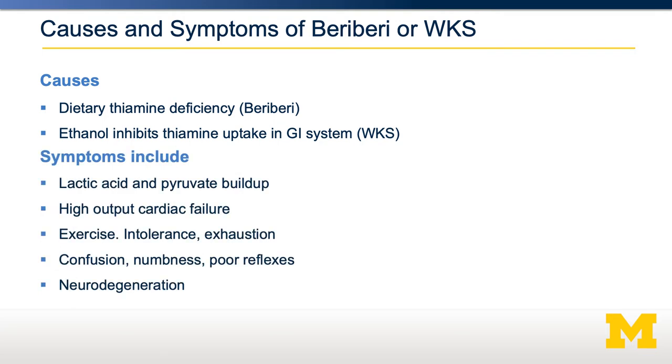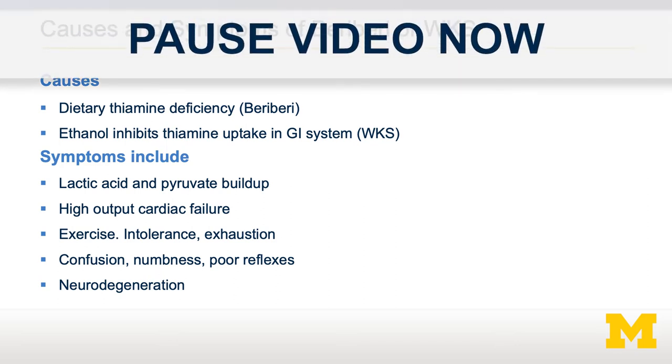Some symptoms are associated with beriberi and Wernicke-Korsakoff syndrome. Take a moment and think about why these symptoms might be associated with lack of pyruvate dehydrogenase complex. For example, exercise intolerance: in order for aerobic metabolism of glucose, you need to go through the pyruvate dehydrogenase complex and into the TCA cycle. In the absence of PDH activity, you're less able to completely extract energy from glucose, so during exercise you'll be exhausted much more quickly. When you undergo anaerobic metabolism, you generate lactic acid, which is why lactic acid and pyruvate build up. Neuronal cells require large amounts of oxidative phosphorylation to function, which is why diseases with impaired oxidative phosphorylation are associated with neurodegeneration and symptoms such as confusion, numbness, and poor reflexes.